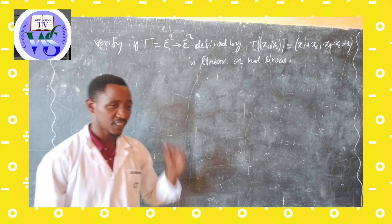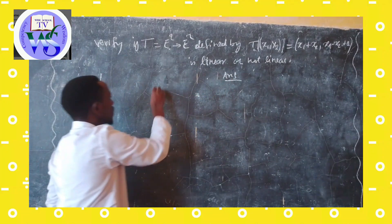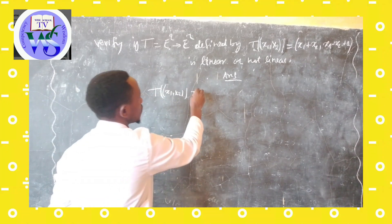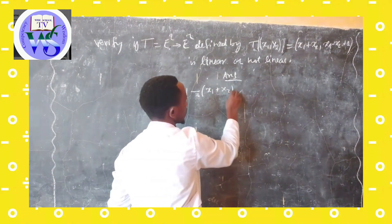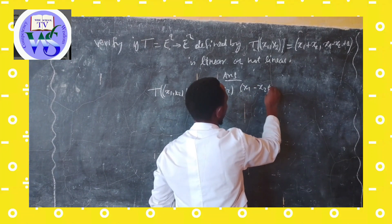So how to answer this question? Answer: we have transformation T(x1, x2) which is the transformation x1 plus x2, and x1 minus x2 plus 1.